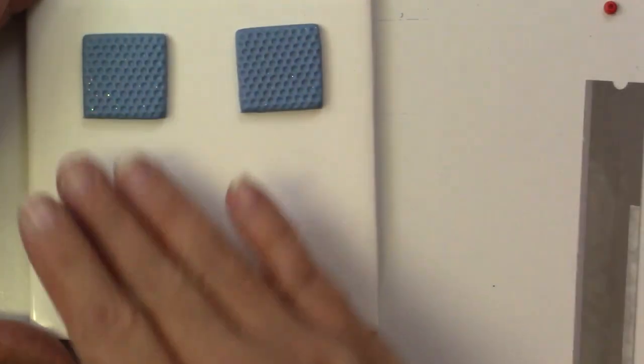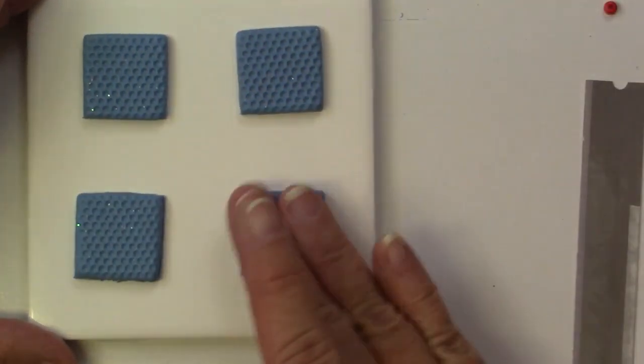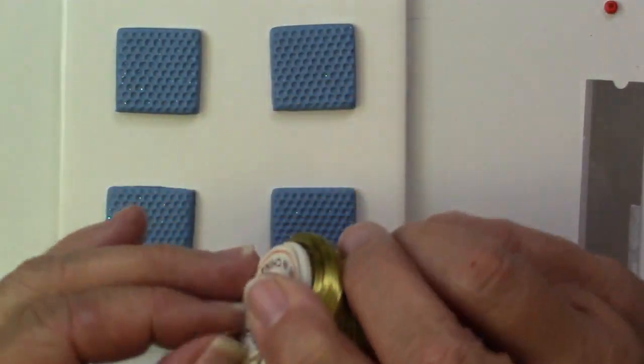So I've got my four tiles and then I'm going to take this 24 gauge wire and I'll cut about four inches for each one of the tiles because this is going to serve as the spring.